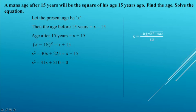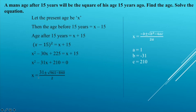Using the quadratic formula x equals minus b plus or minus square root of (b squared minus 4ac) divided by 2a, where a equals 1, b equals minus 31, and c equals 210. Substituting: x equals 31 plus or minus square root of (961 minus 4 into 1 into 210), divided by 2, which is 31 plus or minus square root of (961 minus 840), divided by 2.